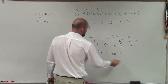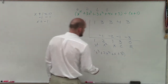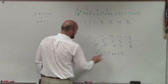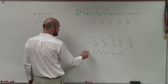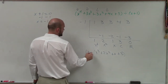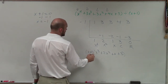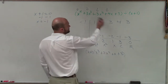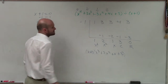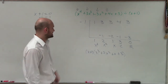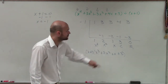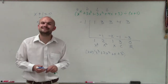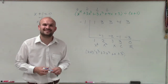What that means is this quotient polynomial times my original divisor, x plus 1, is going to equal my original polynomial. So there you go, ladies and gentlemen — that is how you find your quotient by using synthetic division.